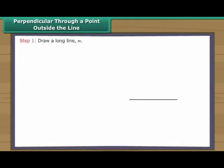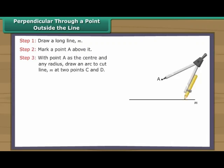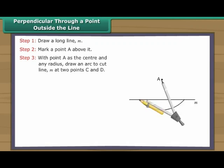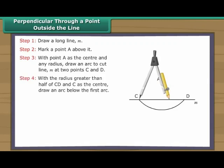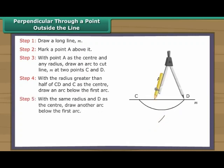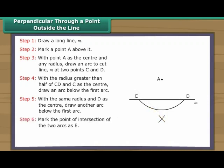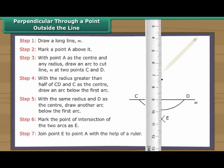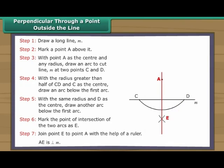Perpendicular through a point outside the line. Draw a long line M. Mark a point A above it. With point A as the centre and any radius, draw an arc to cut line M at two points C and D. With a radius greater than half of CD and C as the centre, draw an arc below the first arc. With the same radius and D as the centre, draw another arc below the first arc. Mark the point of intersection of the two arcs as E. Join point E to point A with the help of a ruler. AE is perpendicular to line M.